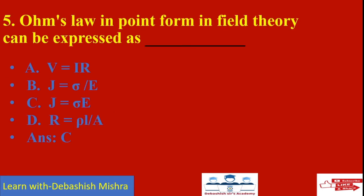Ohm's Law in point form of field theory can be expressed as J = σE. Answer C is the correct answer. Ohm's Law is a statement about how the application of an electric field to a conducting material leads to an electric current. In the equation J = σE, sigma (σ) is the conductivity of the material, E is the applied electric field, and J is the electric current density at a point.